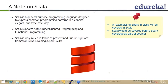The good thing with Scala is that it is a pure object-oriented language with support for functional programming. That looks very exciting. It is a pure object-oriented programming language — everything is an object — but it also gives you support for functional programming.